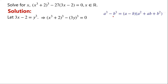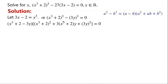a cubed minus b cubed can be written as (a minus b) times (a squared plus ab plus b squared). By applying this, the left-hand side of the equation can be written as (x cubed plus 2 minus 3y) times (x cubed plus 2 squared plus 3 times (x cubed plus 2) times y plus 3y squared) equals 0.